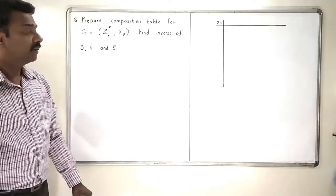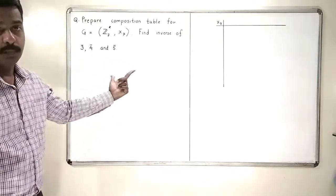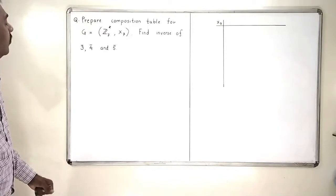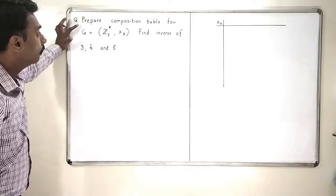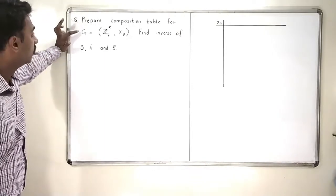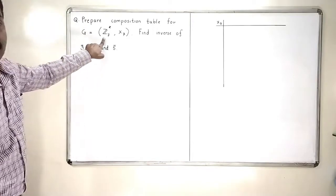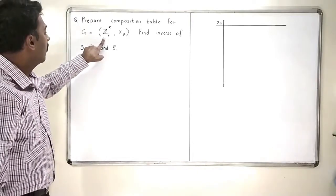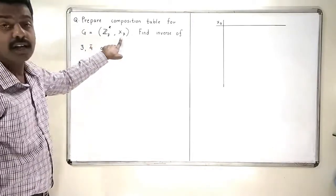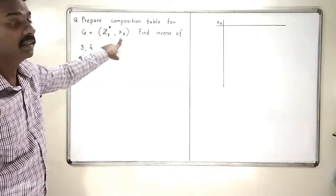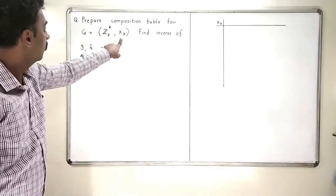We will see the next problem in this section. We have to prepare a composition table for Z7 star, and the operation that we are going to use is multiplication modulo 7.